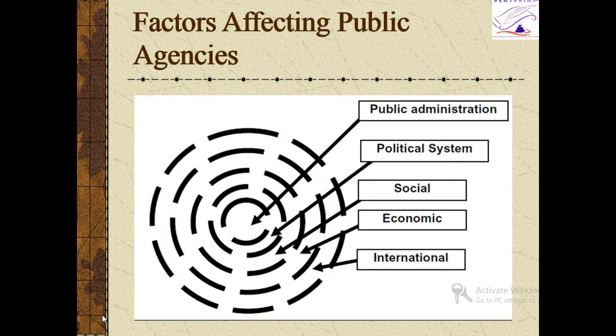Factors affecting public agency: the way democracy functions and the political tradition of a country have an important influence on the working of public organizations. Public administration is governed by the interplay of the political system, social system, economic system, and the international system — including through the United Nations.